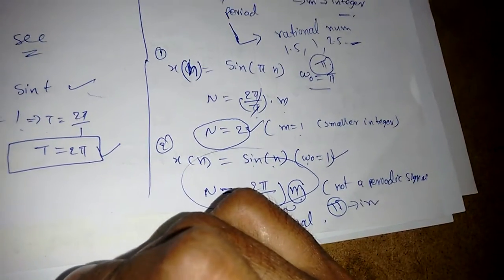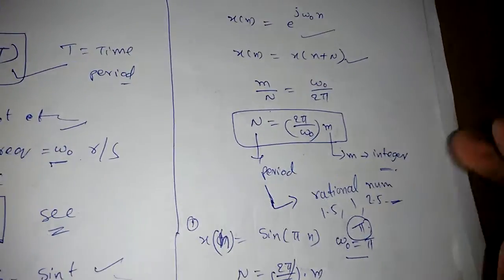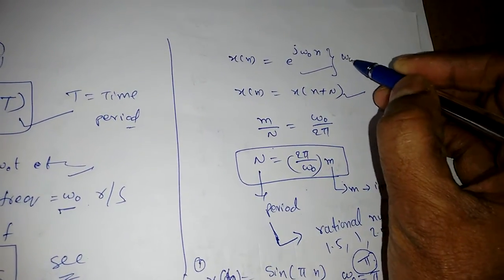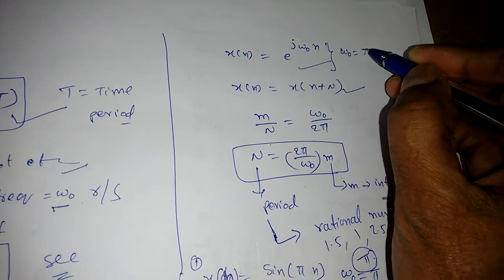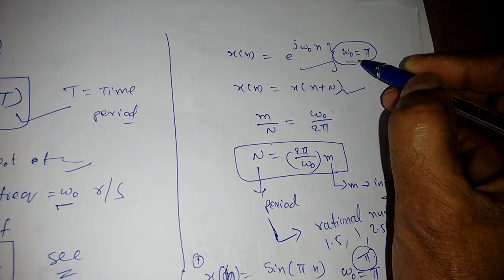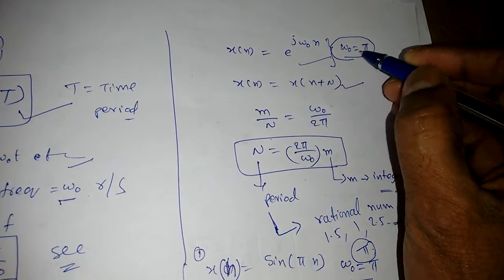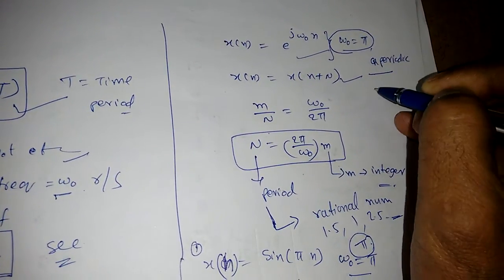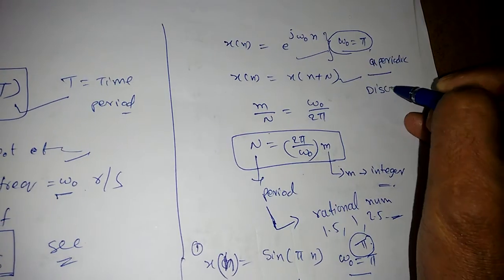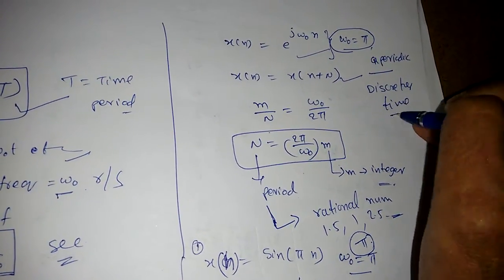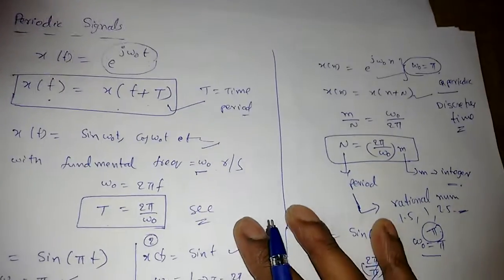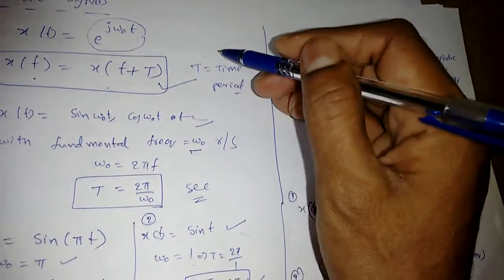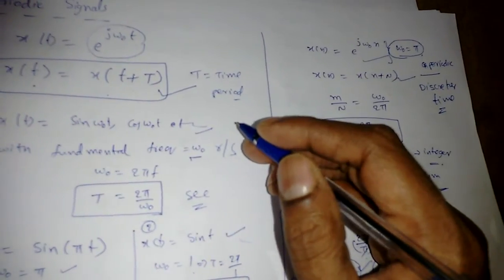Remember: for discrete-time signals, ω₀ must contain a π term for the signal to be periodic. If the signal does not contain a π term, it is generally not a periodic discrete-time signal. Next, we will see problems involving multiple signals — such as finding the time period when two or three signals are added together.